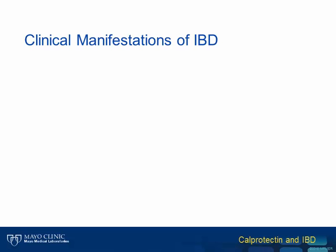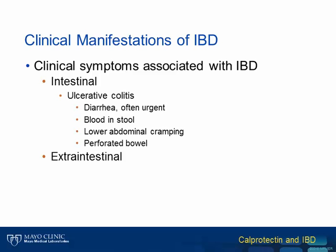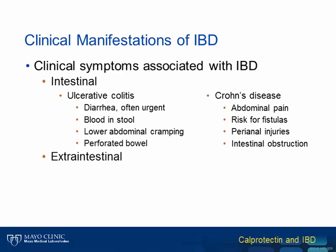There are a variety of clinical symptoms associated with IBD, and these can be classified as either intestinal or extraintestinal. Ulcerative colitis and Crohn's disease each have some unique gastrointestinal manifestations, which can provide clues to the differential diagnosis. Ulcerative colitis can be associated with GI symptoms of diarrhea, bloody stool, lower abdominal cramping, and sometimes a perforated bowel. In contrast, Crohn's disease is more frequently characterized by abdominal pain, fistulas, perianal involvement, and intestinal obstruction.